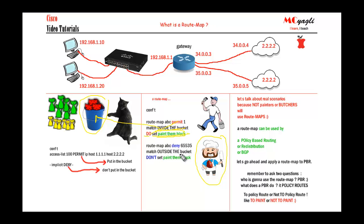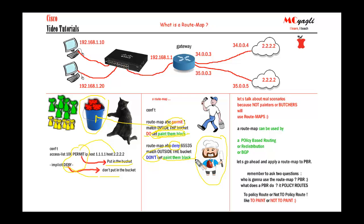I think that's easy to understand. To summarize: in an ACL, permit means put in the bucket and deny means don't put in the bucket. Whereas in a route map, if you use a permit statement it means do whatever the set part says, and a deny statement means don't do whatever the set part says. Permit and deny in route maps have nothing to do with allowing or blocking traffic — that is not their job.